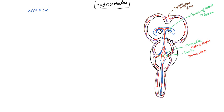Now we can talk about hydrocephalus. Hydrocephalus is any condition which leads to increased CSF fluid. One way you can have increased CSF fluid is by having increased production — this is by far a very rare cause. The only one you can really think of is some type of tumor of the choroid plexus, which is the ependymal cells that produce CSF. That is pretty much it — very, very rare.